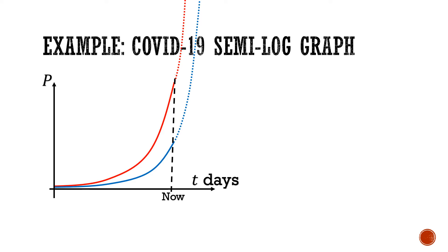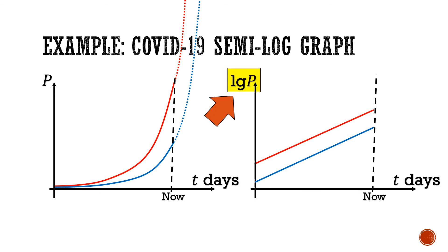However, if we were to change the y-axis and now we plot log base 10 of p against t, this is known as a semi-log graph. The y-axis now increases by a factor of 10 for every unit interval.